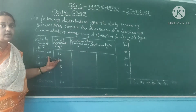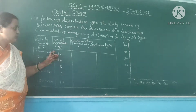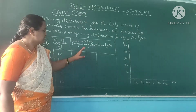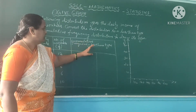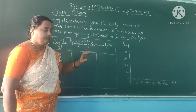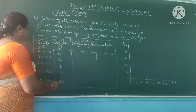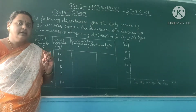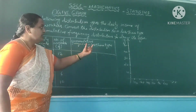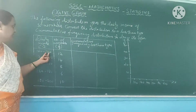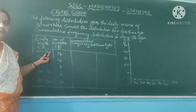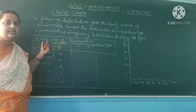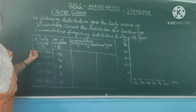These are the data given. First, consider one more column — that is the cumulative frequency less than type. There are two points you should remember. For a less than walker graph, you should consider the upper limit. For a more than walker graph, you should consider the lower limit.